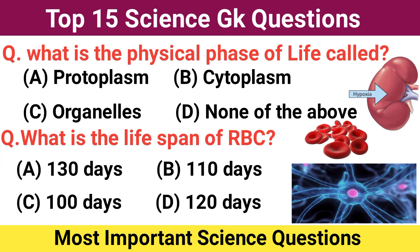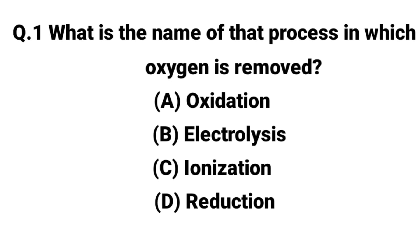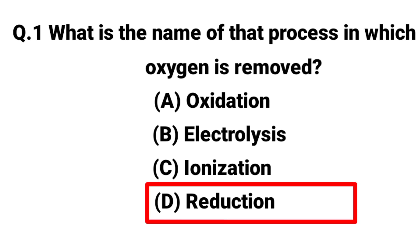Hello friends, welcome to my YouTube channel MAGK friends. Today's video we are going to discuss top 15 science GK questions. Let's start the video. Question number one: what is the name of the process in which oxygen is removed? Answer: D, reduction.